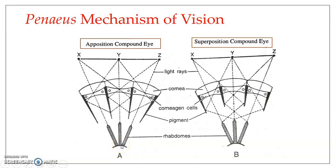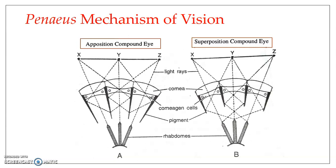In this condition, each rhabdom produces an image of one particular spot on the object, completely independently. When all these images are put together, you get a complete image of the object — that is how mosaic formation occurs. This is called an apposition image because the complete image is formed by several smaller images kept close together in apposition or juxtaposition. The clarity of the image depends upon how many ommatidia are involved in image formation and how well each ommatidium is isolated from the adjacent ones.